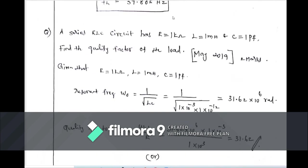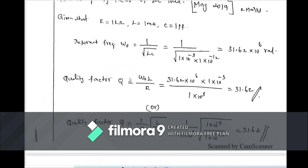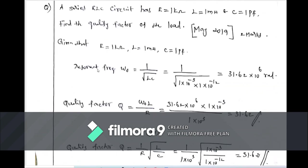Problem 2 (May 2019): A series RLC circuit has R = 1 kilohm, L = 1 millihenry, and C = 1 picofarad. Find the quality factor. First calculate ω₀ = 1/√(LC) = 1/√(1×10⁻³ × 1×10⁻¹²). Computing this gives ω₀ = 31.6 × 10⁶ radians per second.